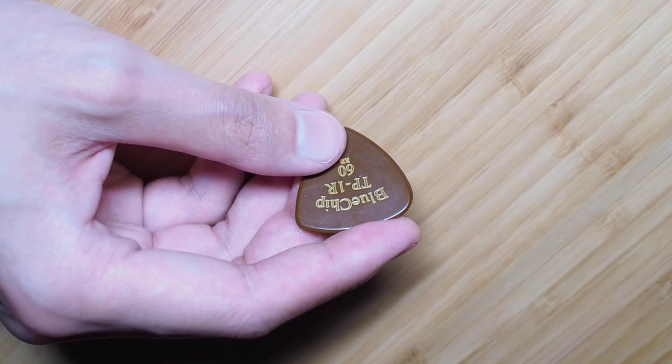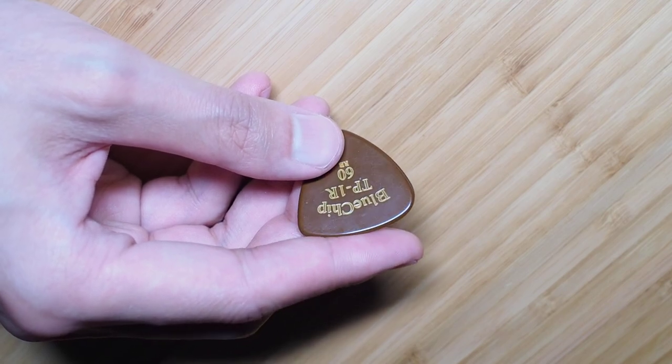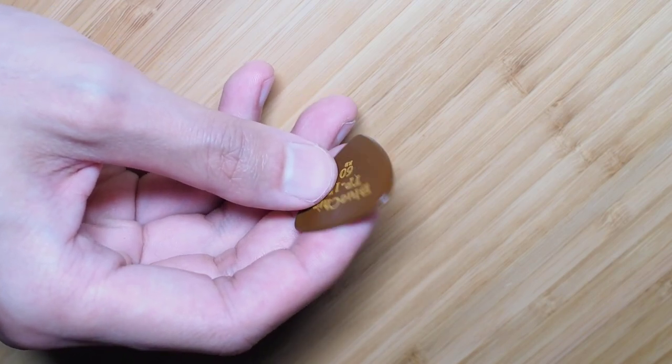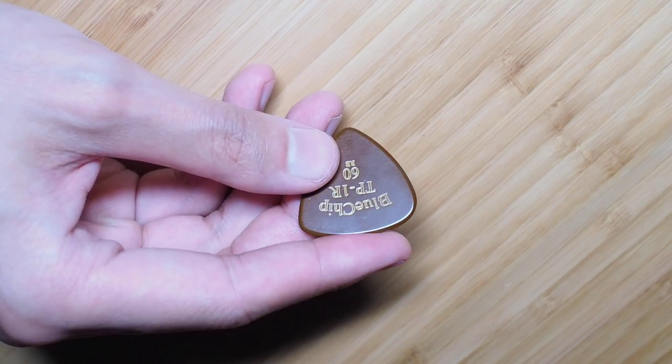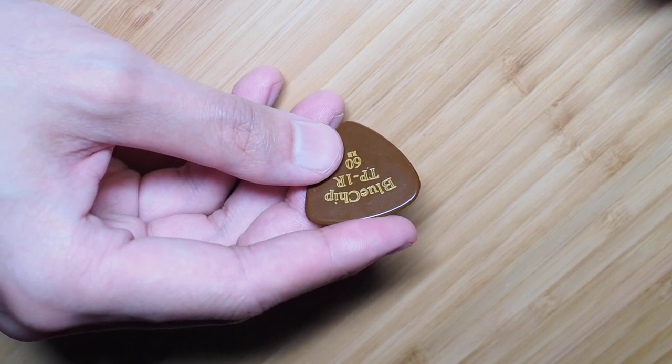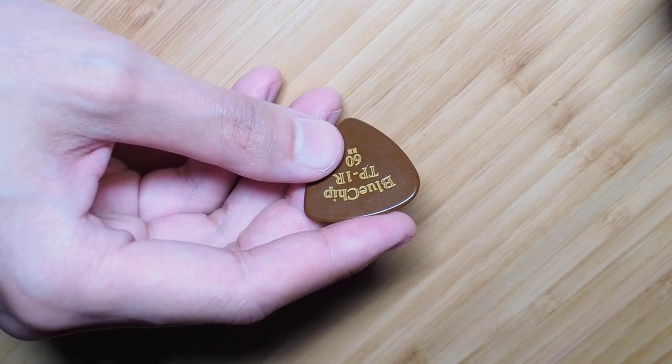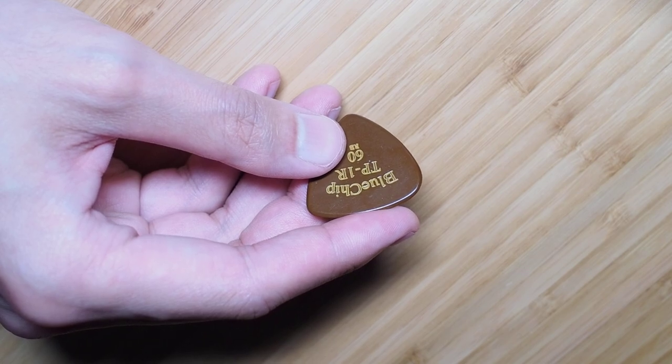So today I'm going to talk about how to get the best possible tone out of your picks. It doesn't matter what kind of pick you buy - it could be a very expensive blue chip pick like this that costs $35 or a $0.25 Dunlop pick.